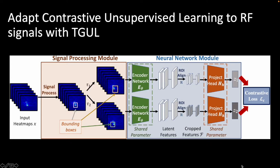ROI-align is adopted with the given bounding box to crop out regions containing humans. A nonlinear projection head is used to generate normalized features, and contrastive loss is then used to train the model.